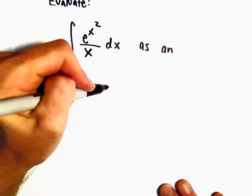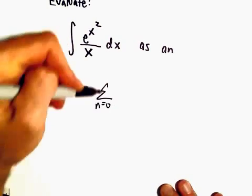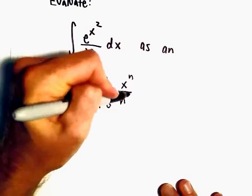To do that, recall that e^x can be written as the sum from n=0 to infinity of x^n over n factorial.